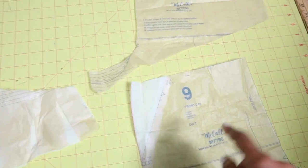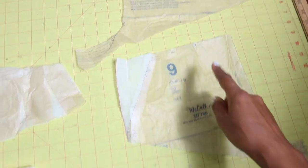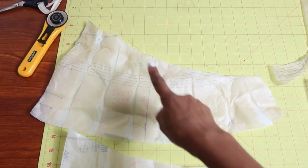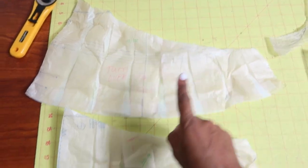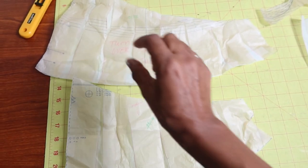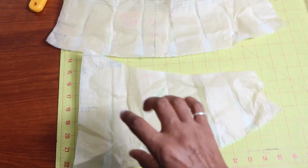I just realized that I forgot to add seam allowance to these cut edges. So before I make my next pair, I will go ahead and add seam allowance to all these areas, and like I said, I'm going to spread this out a little bit more.